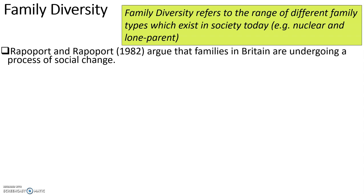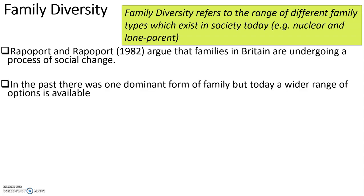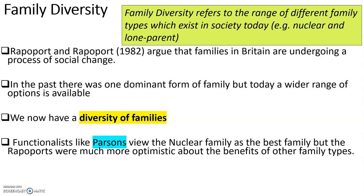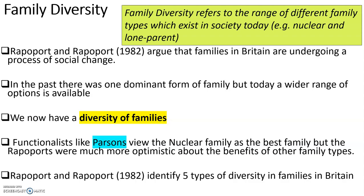Family diversity is basically the range of different types of family that are currently in the UK. If we think about how societies have changed, Rapoport and Rapoport argue that families in Britain are going through a process of social change. We used to have mostly nuclear families, but now there are a lot more options available. Functionalists like Parsons have viewed the nuclear family as the best type, but the Rapoports are quite optimistic about the benefits of other family types. They looked at five different types of family diversity in the UK.